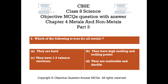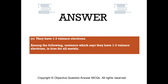Question number 8. Which of the following is true for all metals? Option A: they are hard. Option B: they have high melting and boiling points. Option C: they have 1 to 3 valence electrons. Option D: they are malleable and ductile. The right answer is option C. They have 1 to 3 valence electrons. Among the following, the statement which says they have 1 to 3 valence electrons is true for all metals.